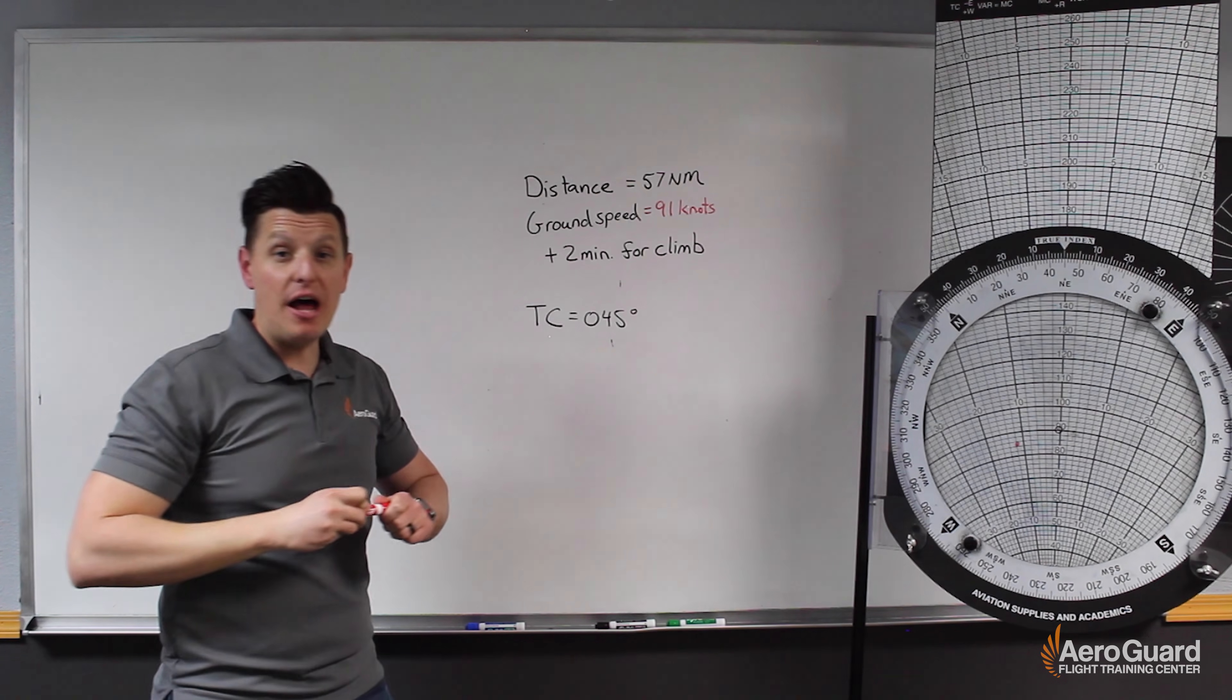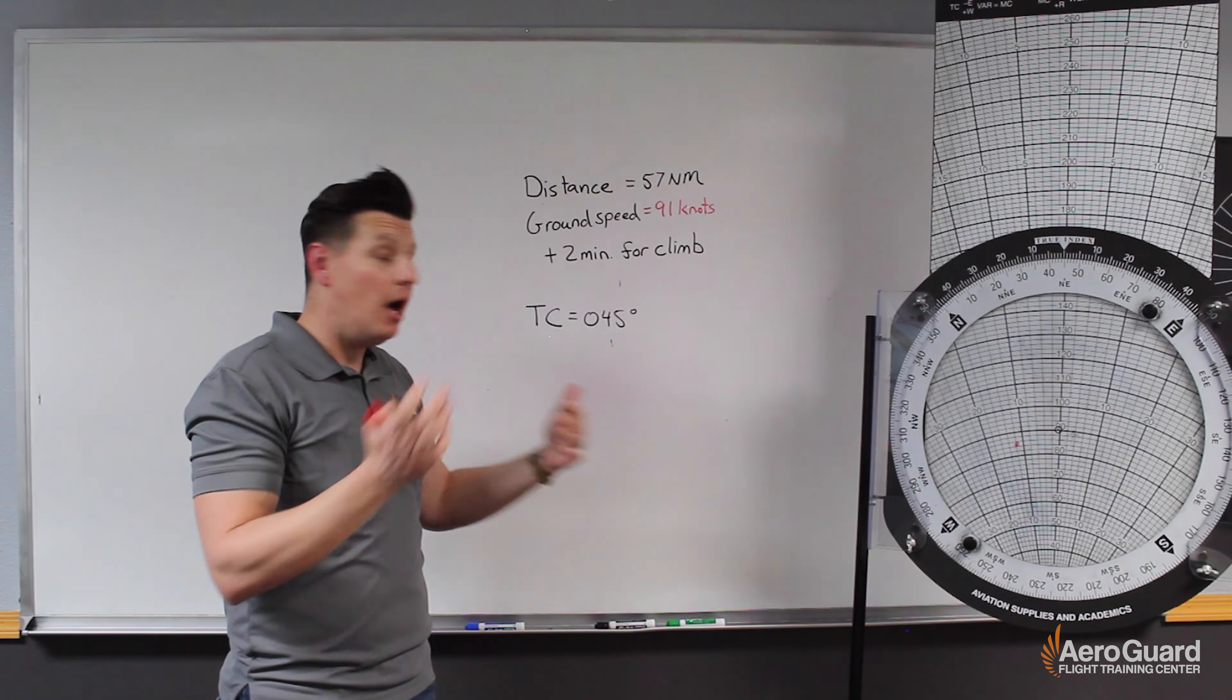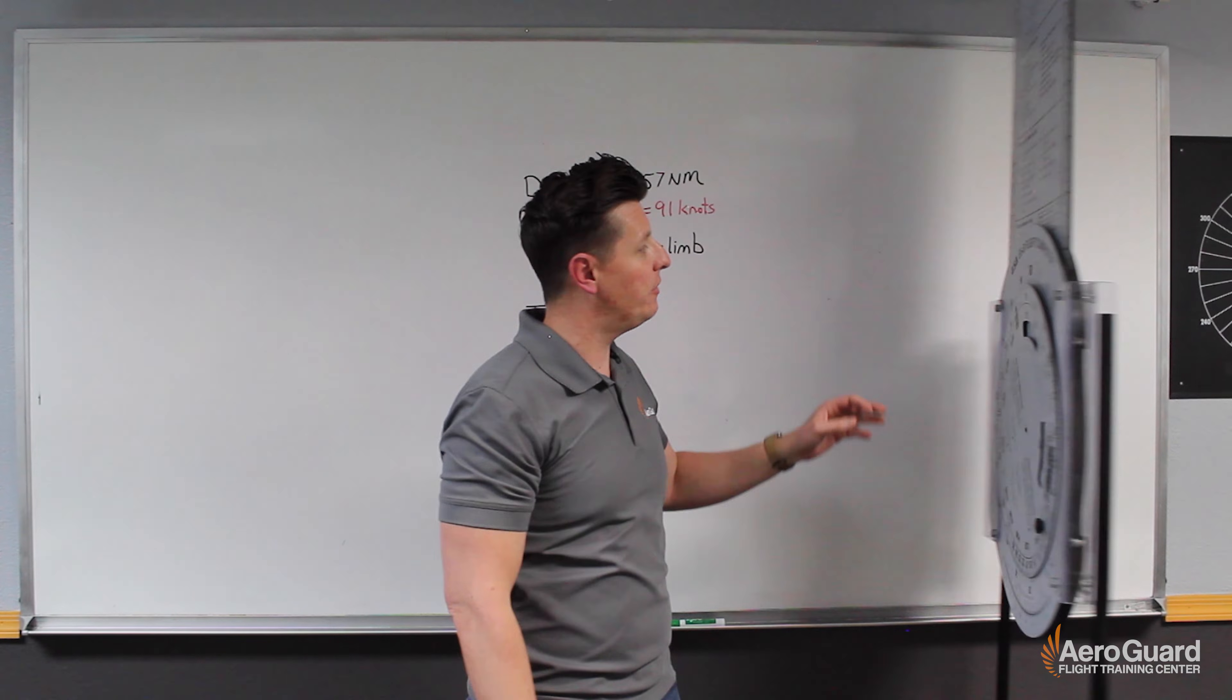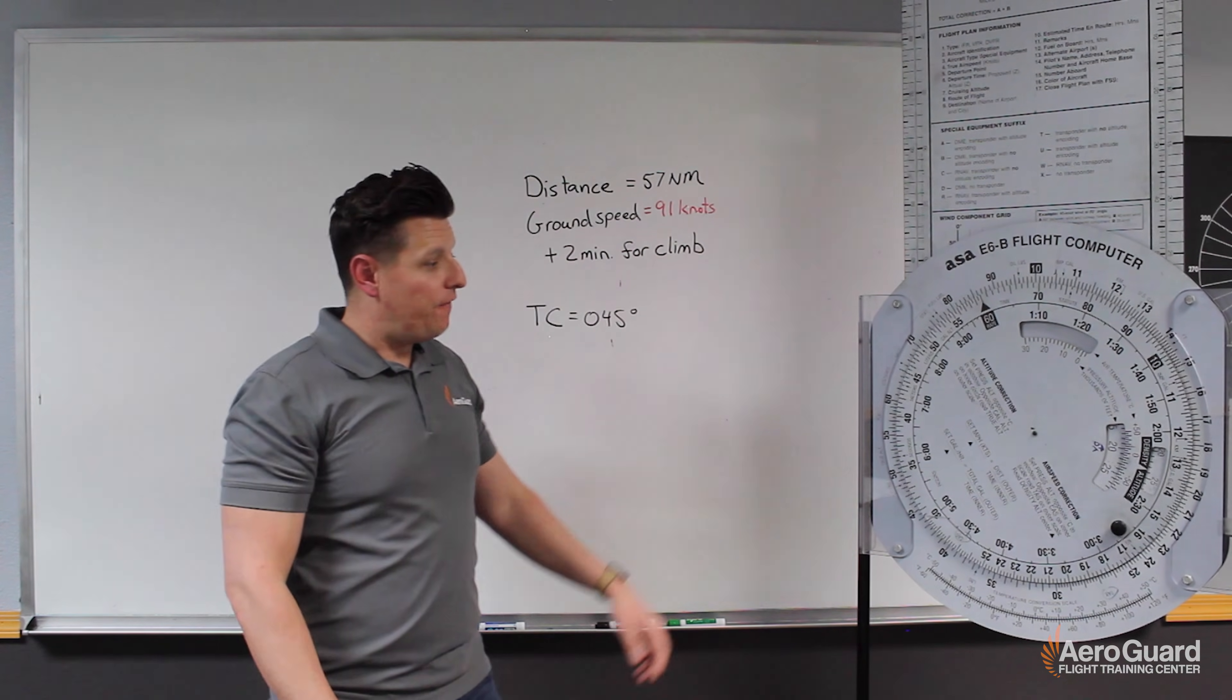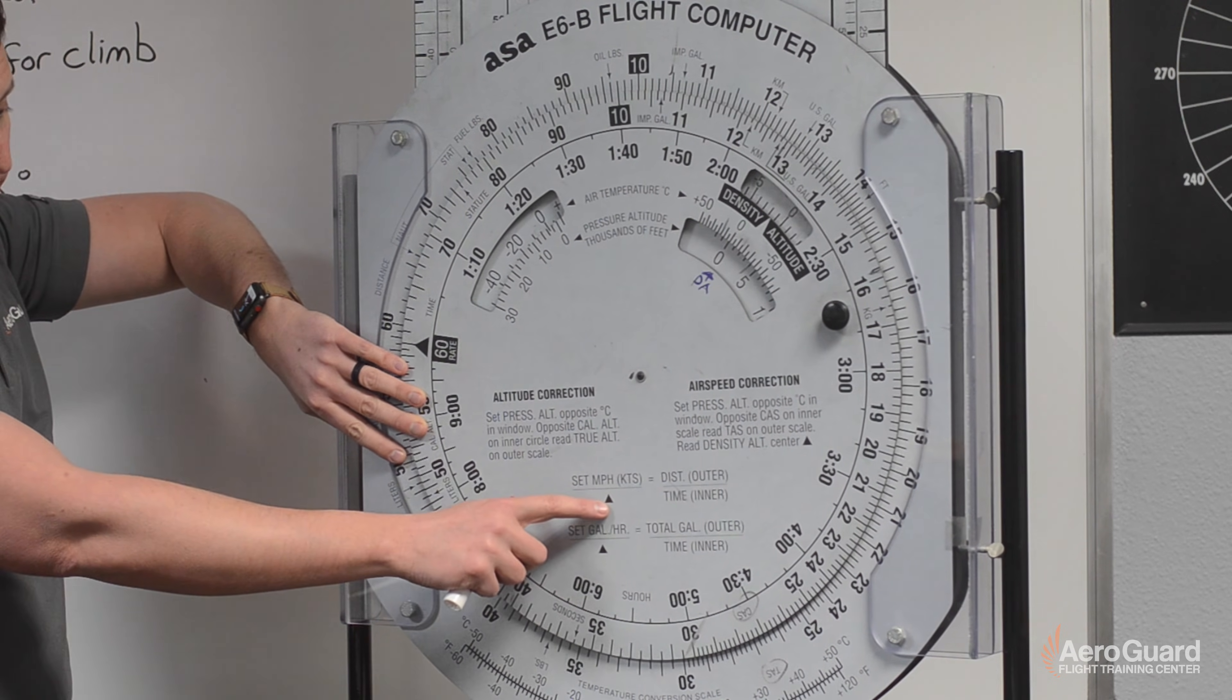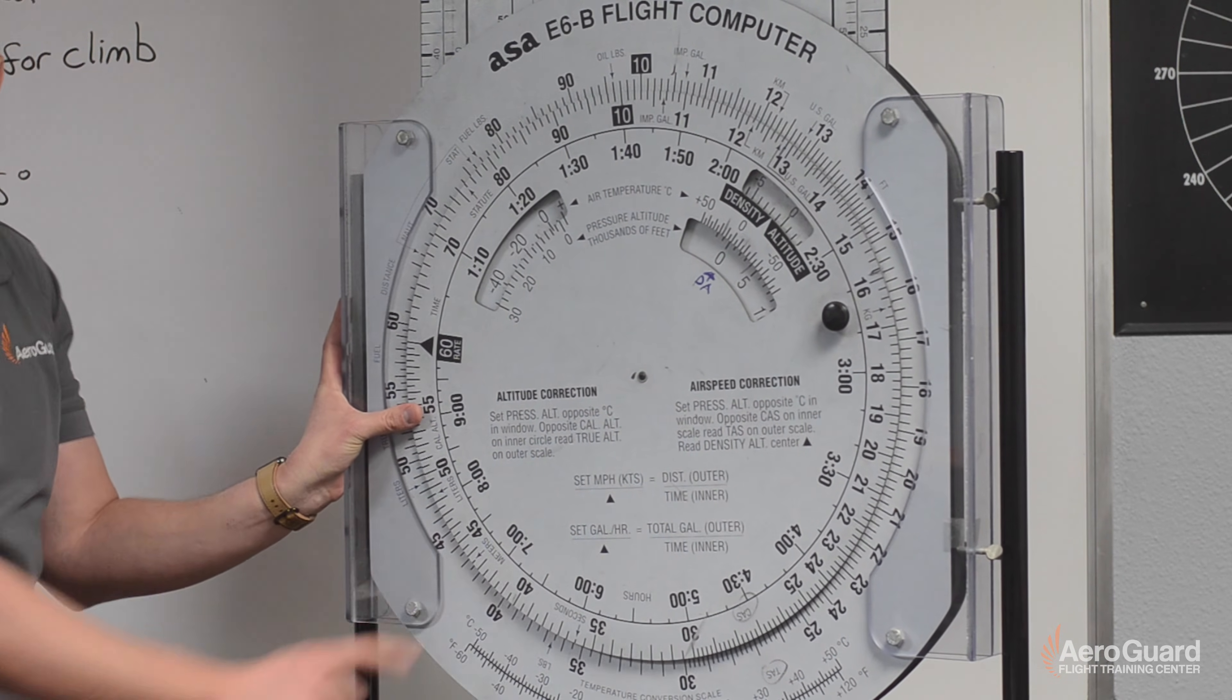Okay so now the question is how are we going to use the distance and the ground speed to calculate what our time in route will be. For that we're going to need to switch to the other side of the E6B. So I'll spin it around here. And now we're going to follow the instructions that you see written down here. We're going to put our ground speed over the black triangle. And then we'll find our distance on the outer ring and then the time in route on the inner ring.